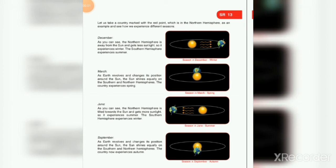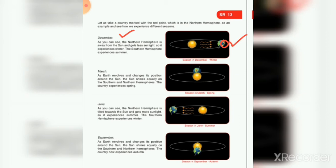Now you will open SR13. Let us take a country marked with the red point which is in the northern hemisphere as an example and see how we experience different seasons. In December, the northern hemisphere is away from the sun and gets less sunlight, so it experiences winter. The southern hemisphere experiences summer. The red dot is in the northern hemisphere where sunlight is less, so there is winter, and the opposite southern hemisphere has summer.